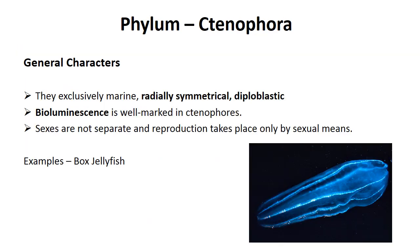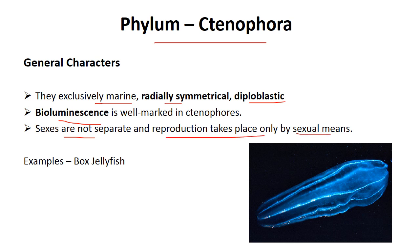Now phylum Ctenophora. It has a unique character: bioluminescence — they emit light from their body. They are exclusively marine, radially symmetrical, and diploblastic. Sexes are not separated, meaning a single body has both male and female. Reproduction takes place only sexually. Example: box jellyfish.